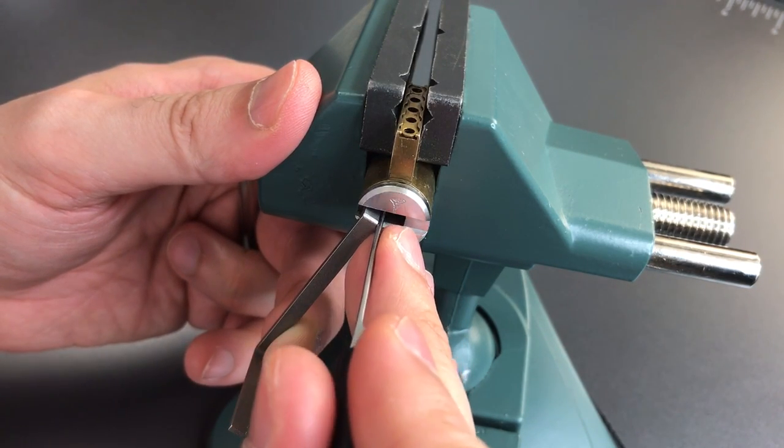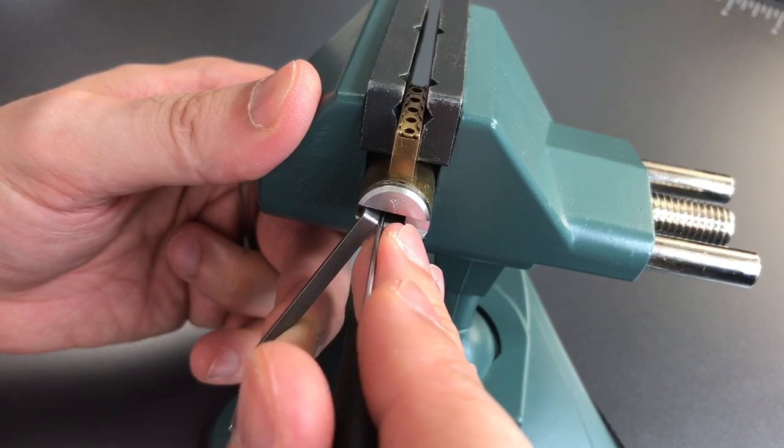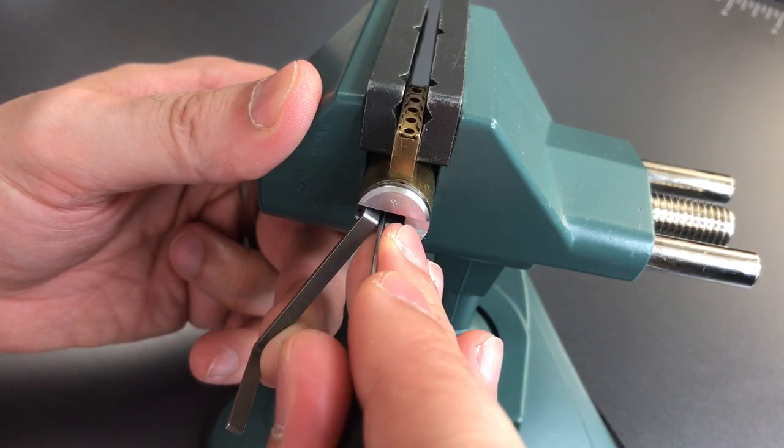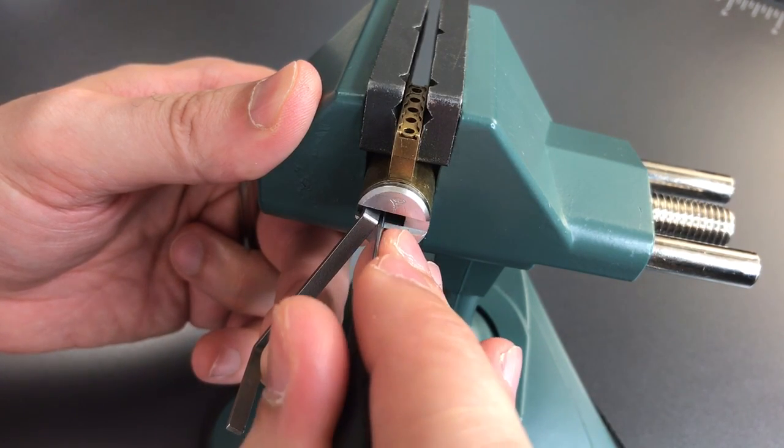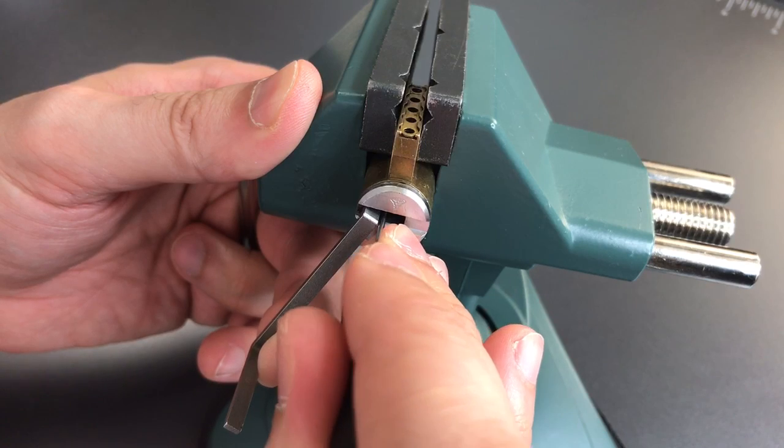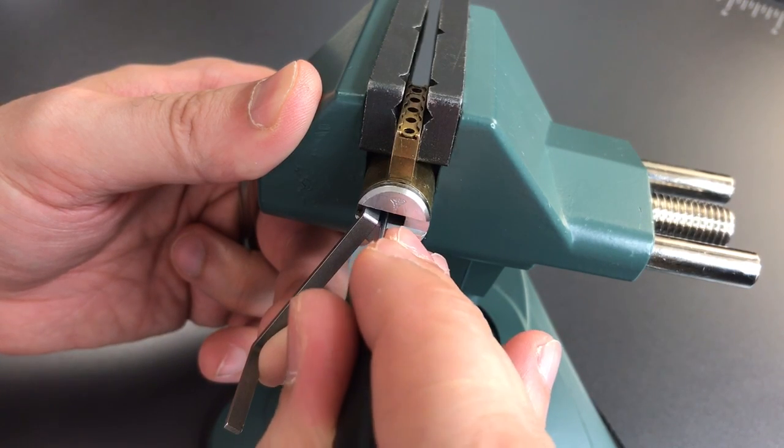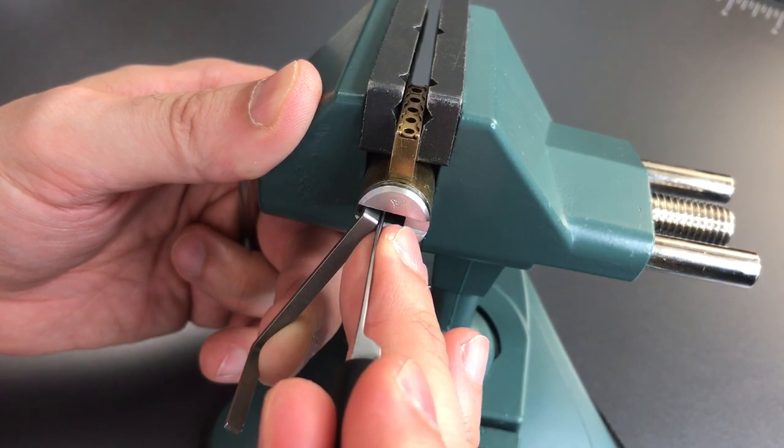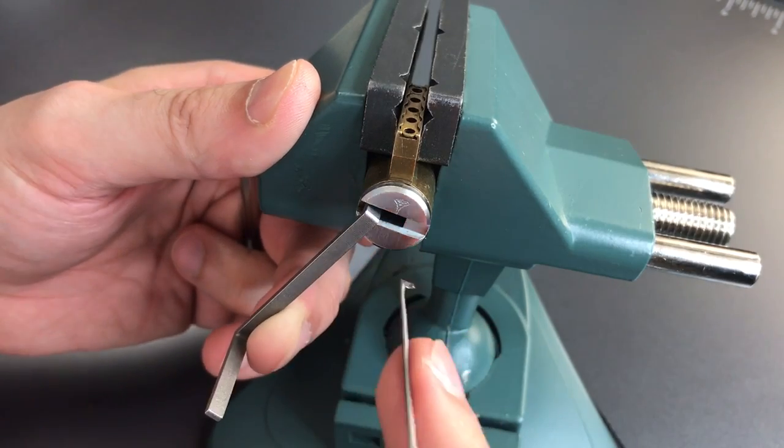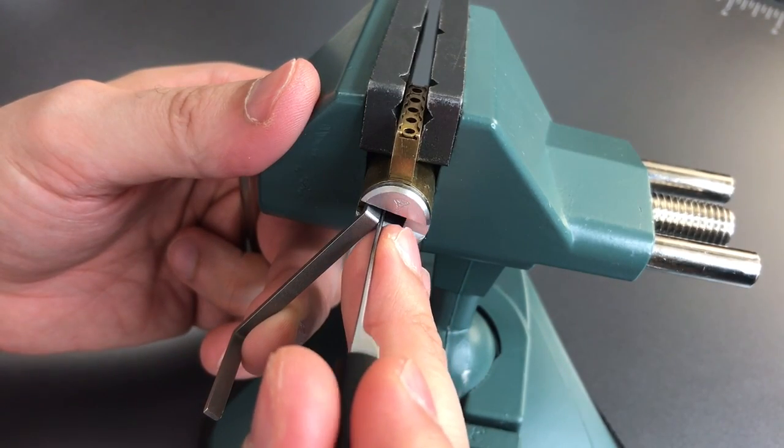And see if that made a difference. Three—got a click on the inner pin. Four—click on the inner pin. Nothing on five. Number one—click on the inner pin. And we got a nice deep false set.